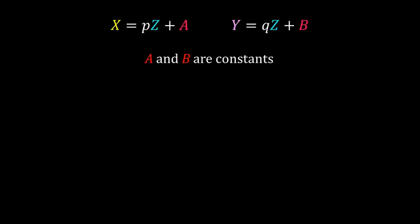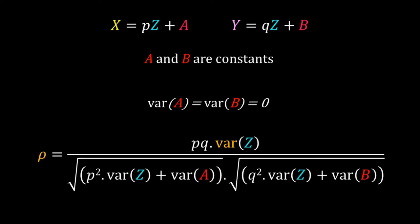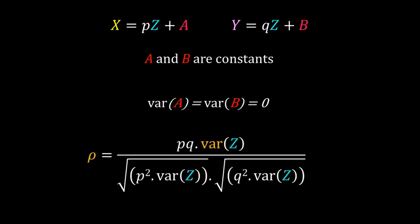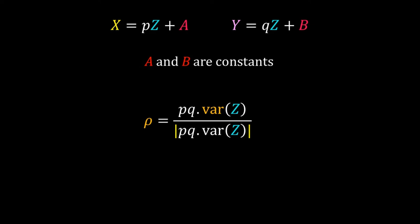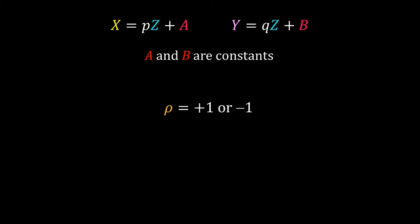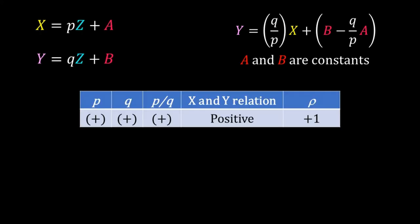Consider an extreme case where a and b are constants rather than random variables — so there is no noise and the association between x and y is perfectly linear. Since variance of a and variance of b are both zero, we remove those terms. Taking the absolute value in the denominator to reflect that standard deviations are always positive, the numerator and denominator cancel, giving rho equal to plus one or minus one. When both p and q are positive, x and y have a positive linear association and rho is +1.